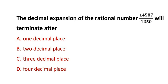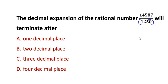For this kind of question, do not go for long division — that is, actual division of 14587 by 1250. There is a short way of doing it because this falls under the no-calculator section. So we have to know the shortcut. We look at only the denominator and find out its factors using prime factorization.